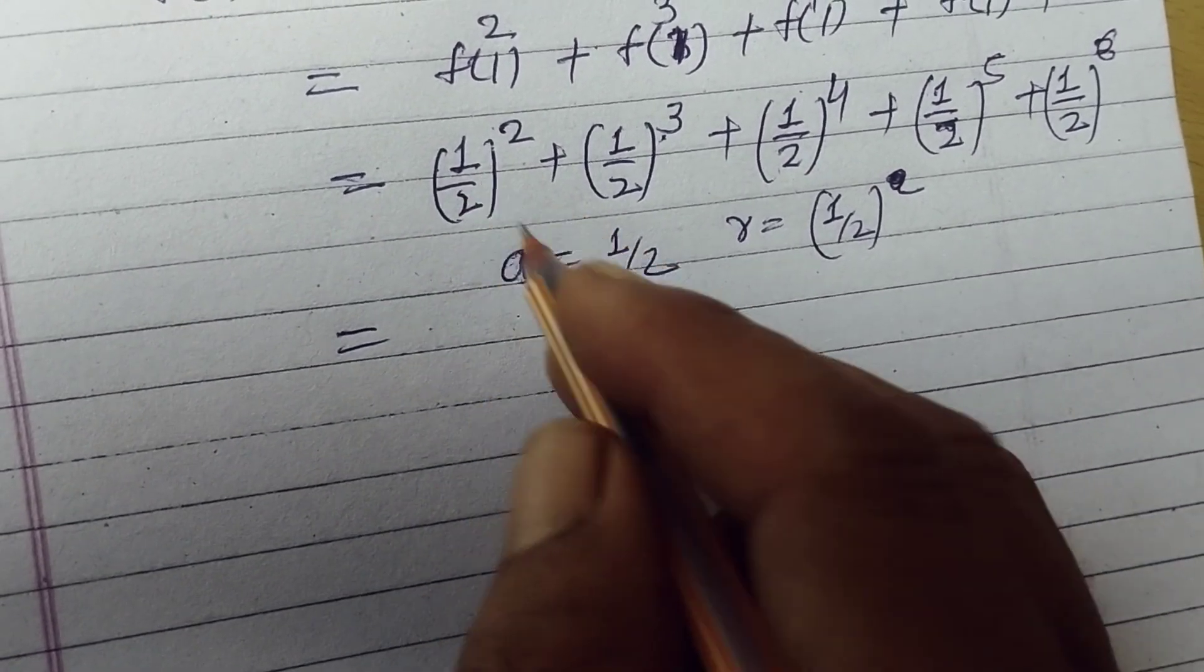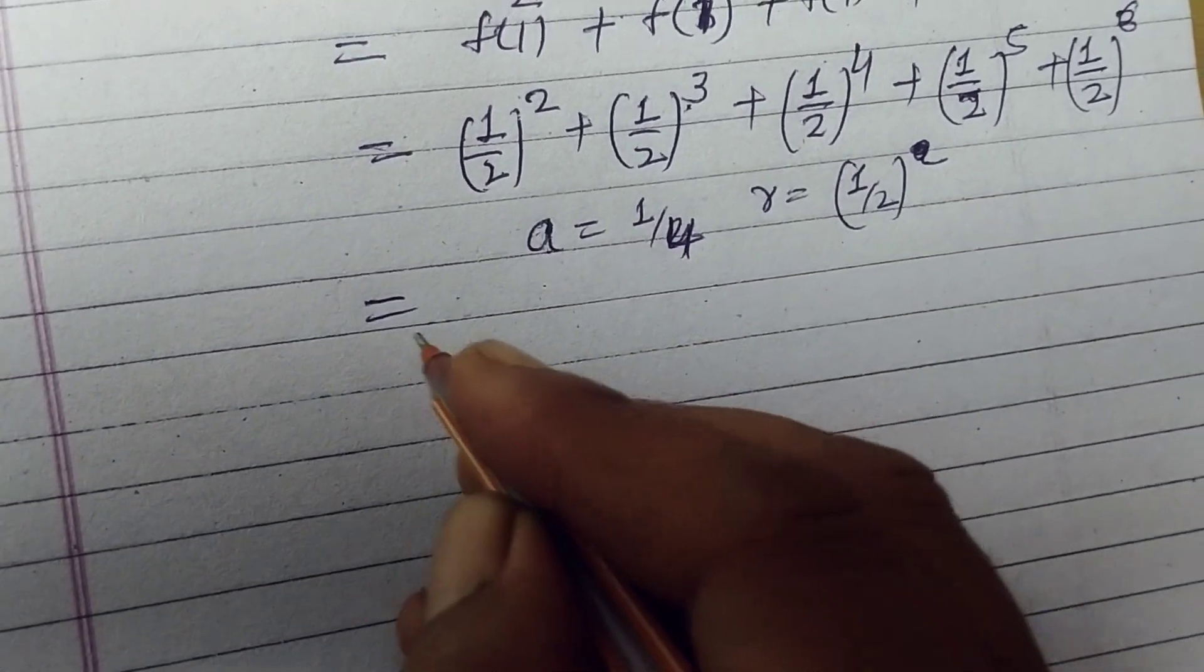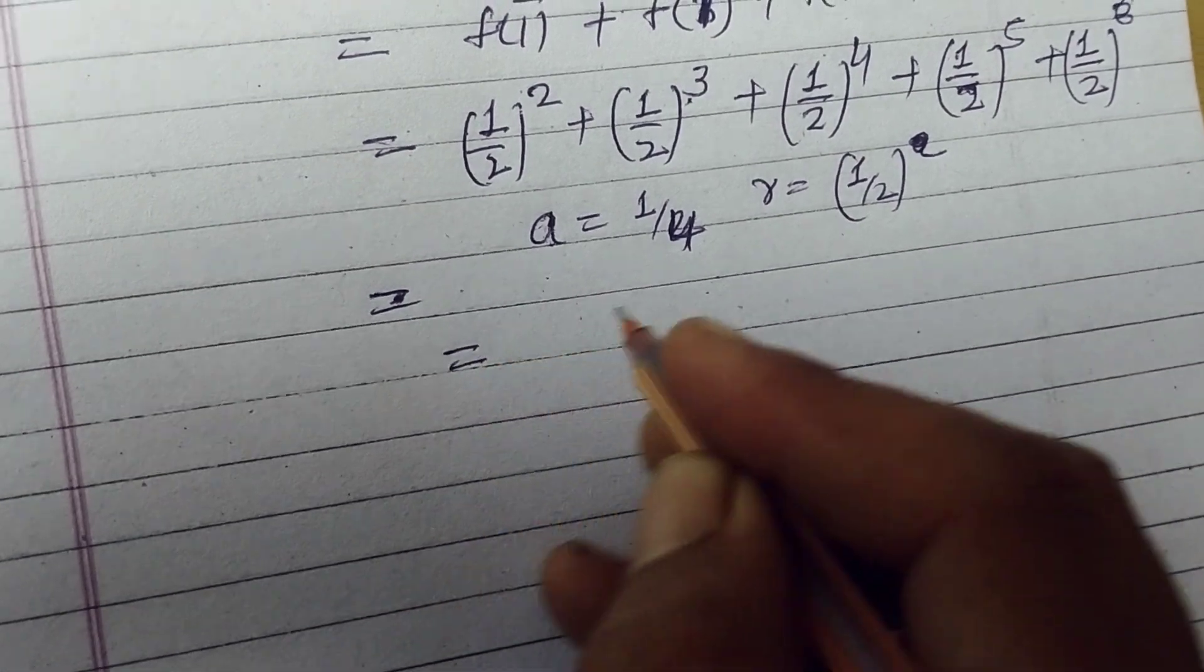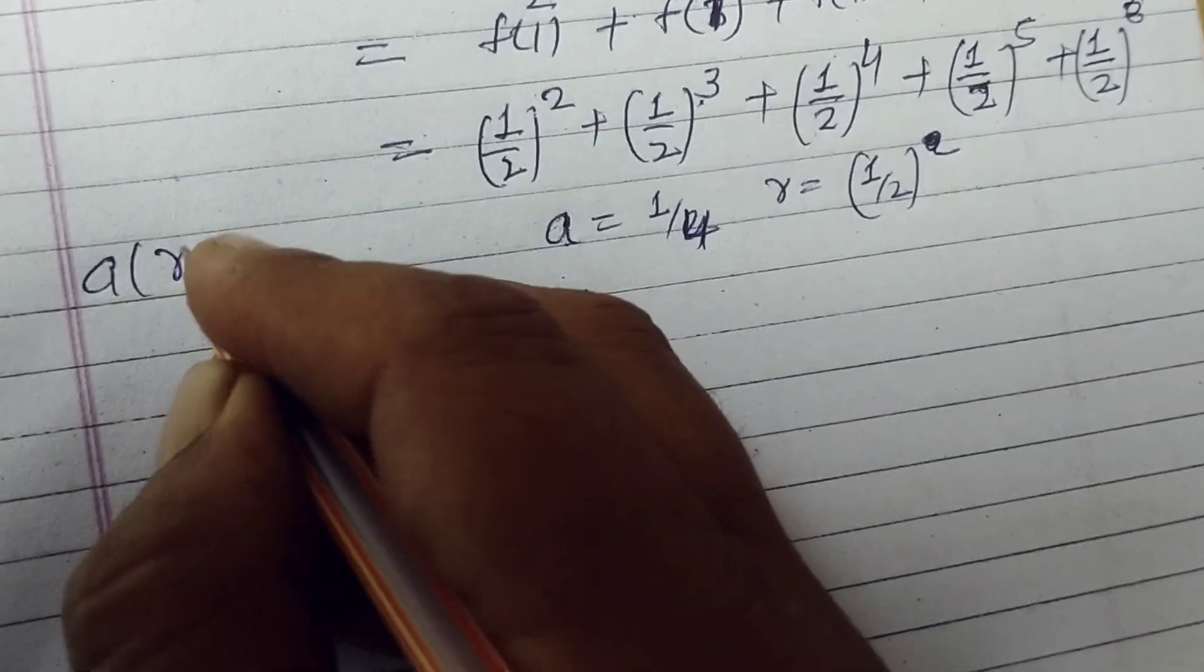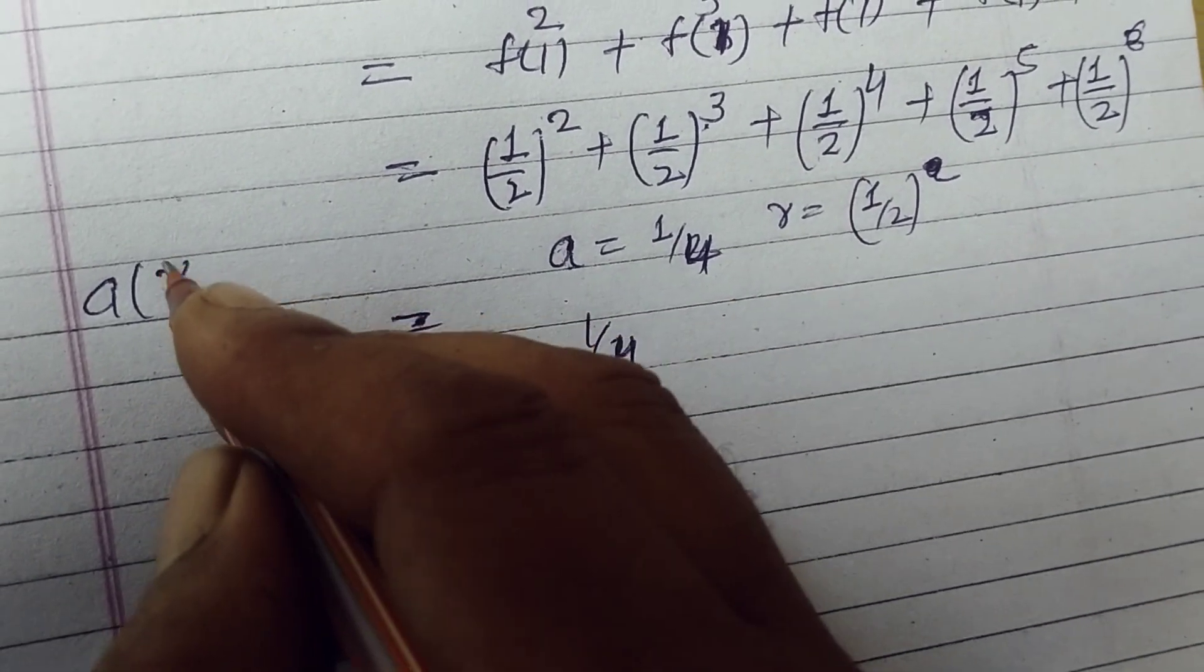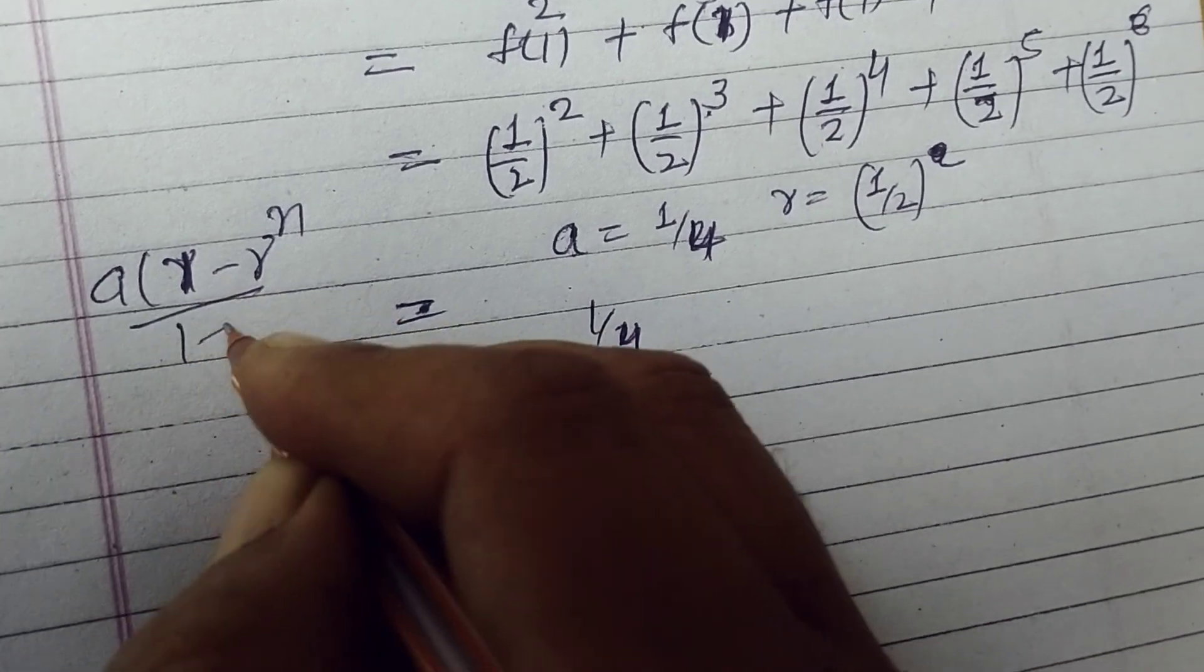Therefore a is 1 by 4 because it is the whole square of 1 by 2. So a is 1 by 4, therefore sum is 1 by 4 times 1 minus r to the power n upon 1 minus r.